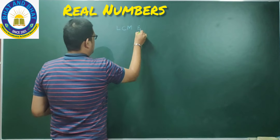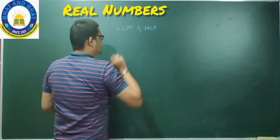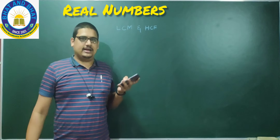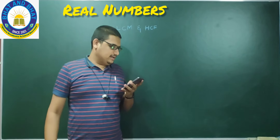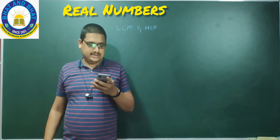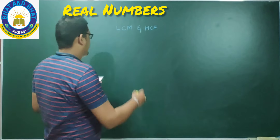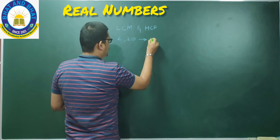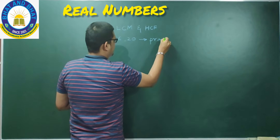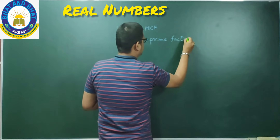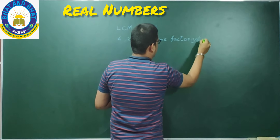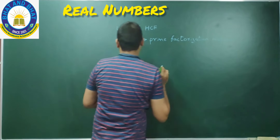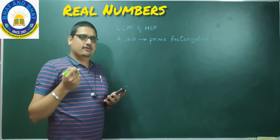LCM and HCF of 2 positive integers. Before going into that, let me give you this example and explain the concept. Please note down: find the LCM and HCF of 6 and 20 by the prime factorization method. The given numbers are 6 and 20, and they have asked you to follow the prime factorization method. Under prime factorization, we have to express the given numbers in terms of their prime factors.